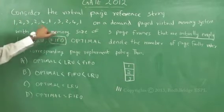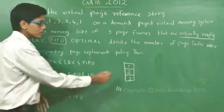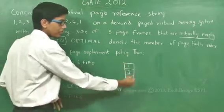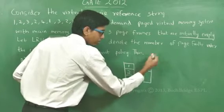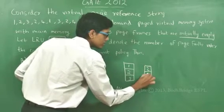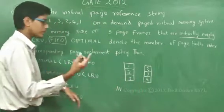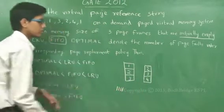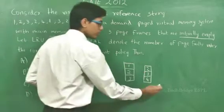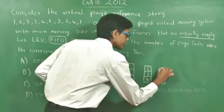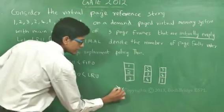Next is 4. Since this is FIFO (first in, first out), 1 will be pushed out and 4 will be pushed in. So the frames become 2, 3, 4. That was a page fault. Next is 1 — 2 is popped out and 1 is pushed in, giving frames 3, 4, 1. That was another page fault.